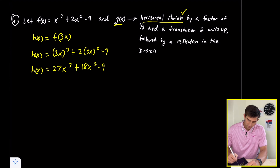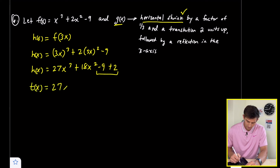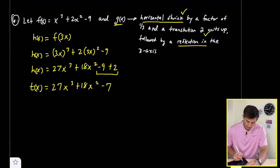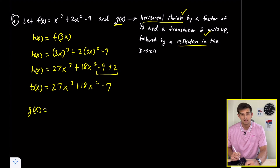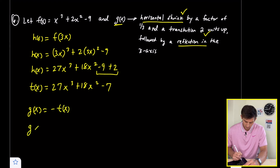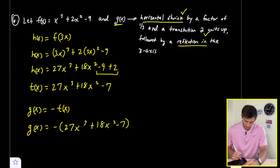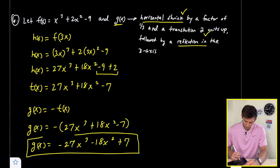For the translation two units up, we add plus two, combining to get t of x equals 27x cubed plus 18x squared minus seven. Now for the reflection in the x-axis, we make the whole function opposite, so g of x equals the opposite of 27x cubed plus 18x squared minus seven, giving g of x equals negative 27x cubed minus 18x squared plus seven. That's our final transformed polynomial function.